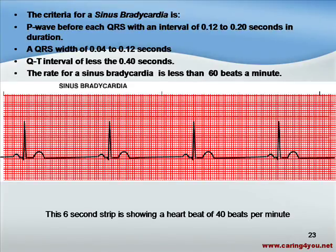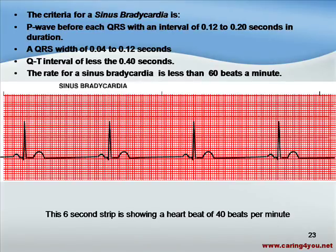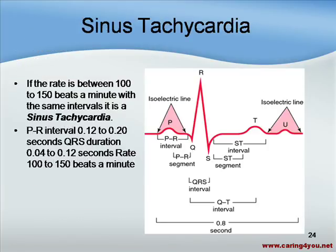This is an estimate of the rate. In a six-second strip, there are little black notches at the top. Each one of these notches represents a three-second interval, so notch to notch is three seconds. You only count what is in between these marks. In this particular example, three seconds plus three seconds makes a six-second EKG strip.